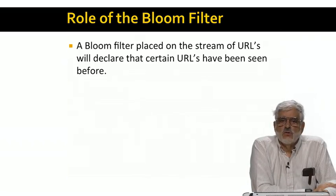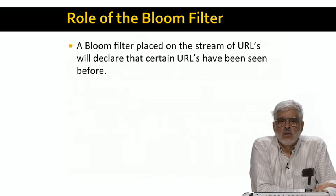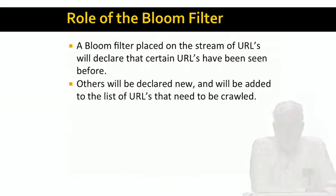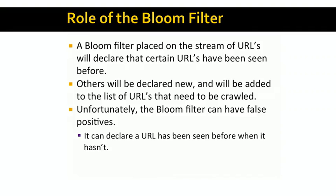When a URL arrives in the stream of reports from the crawling tasks, instead of looking it up on disk, we can pass it through a Bloom filter. This filter will say either that the URL has been seen before or not. If the filter says it has not been seen before, the URL will be added to the list of URLs that need to be crawled, and eventually it will be assigned to some crawling task. The bad news is that occasionally, the Bloom filter will give a false positive. That is, it will say the URL has been seen before, when in fact it has not.